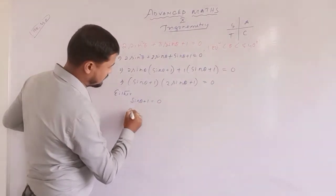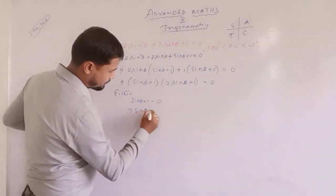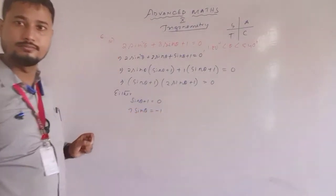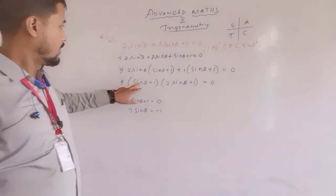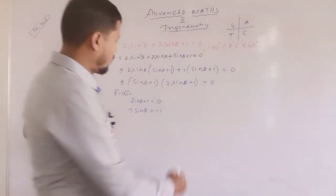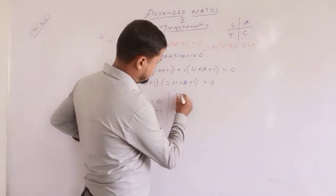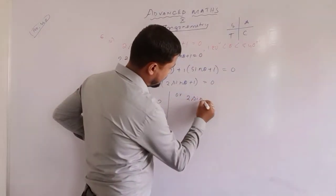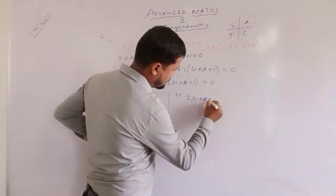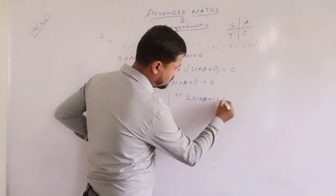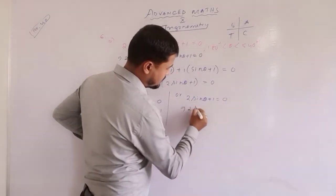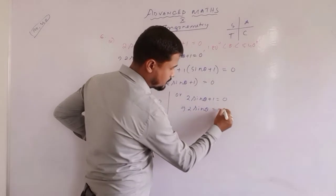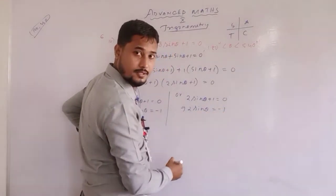This implies sinθ + 1 = 0, so sinθ = -1. And from 2sinθ + 1 = 0, we also get sinθ = -1/2.